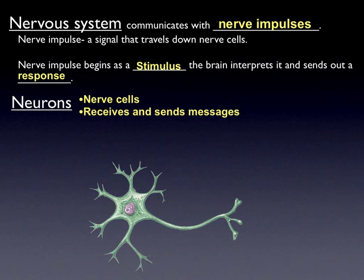This is a nerve cell — a neuron. The largest portion of the nerve cell is called the cell body, and that's where most of the organelles of the neuron are. You can see in there — what organelle do you think that is? A nucleus.